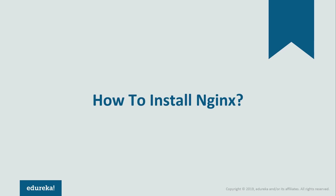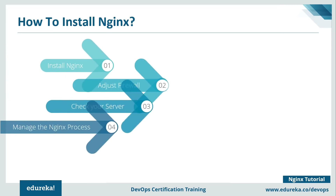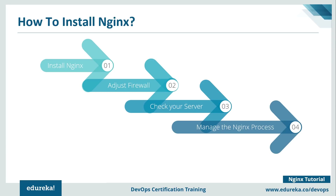Now let's look at how to install Nginx. To install Nginx, you follow four steps: install Nginx, adjust your firewall, check your server, and then manage your Nginx process. Once Nginx is installed, you adjust the firewall. Then you check whether your server is running, and finally you can manage the Nginx process — restart or stop it.